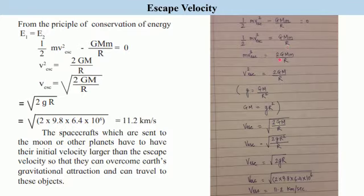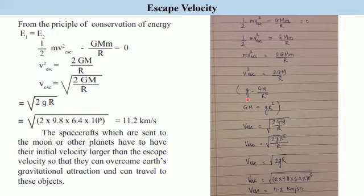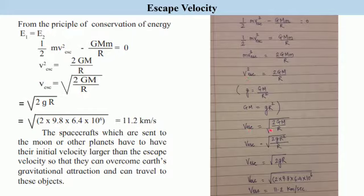mv² = 2GMm/R, where 2 has been taken to the numerator. So v² = 2GM/R. From here, the mass of the object m cancels from both sides. We also know that g = GM/R², so GM = gR². Going back to v²_escape = 2GM/R, and removing the square by taking the square root, we get v_escape = √(2GM/R).